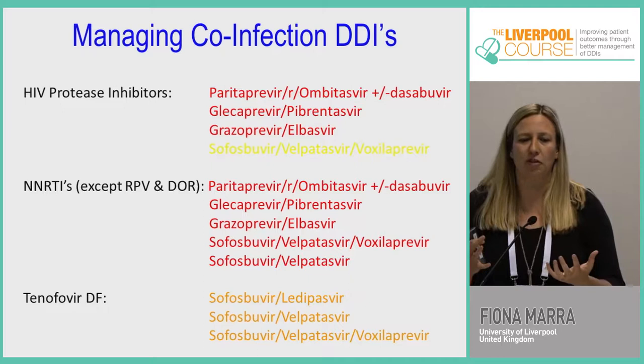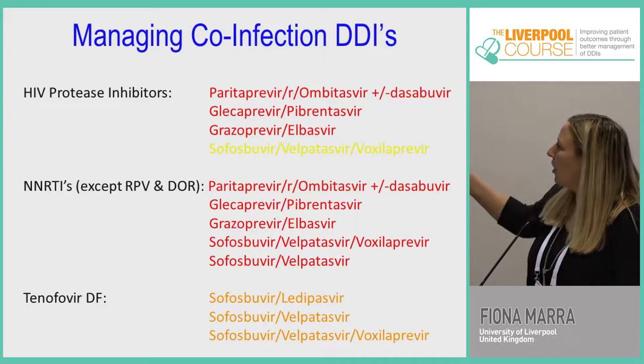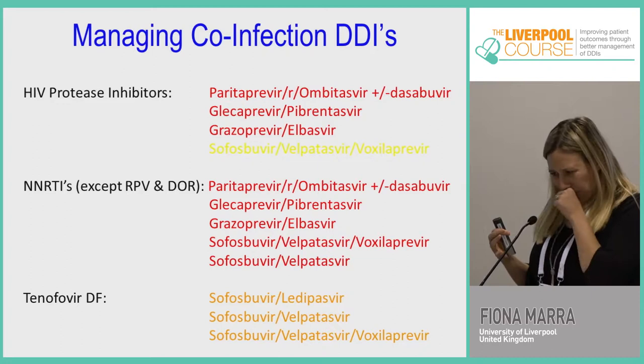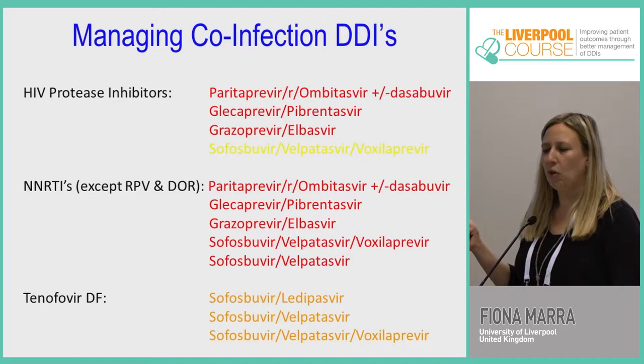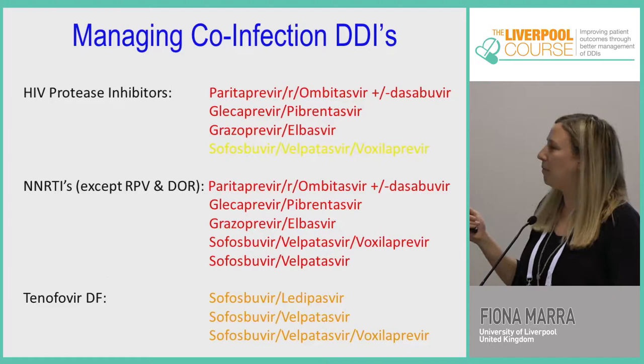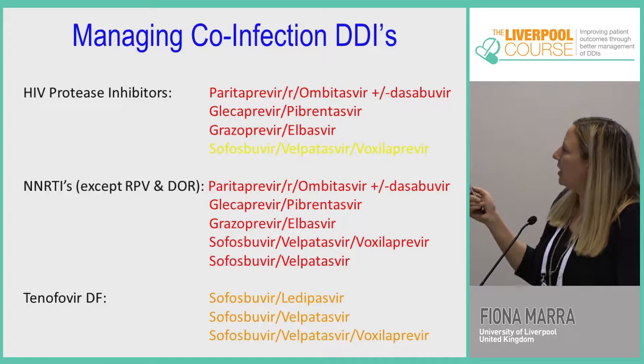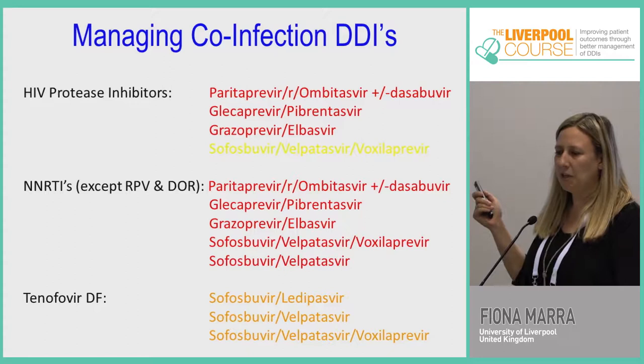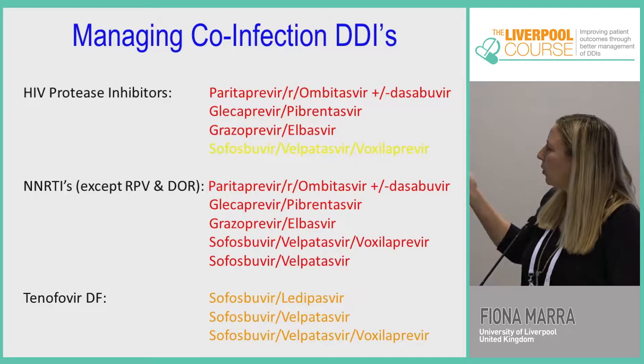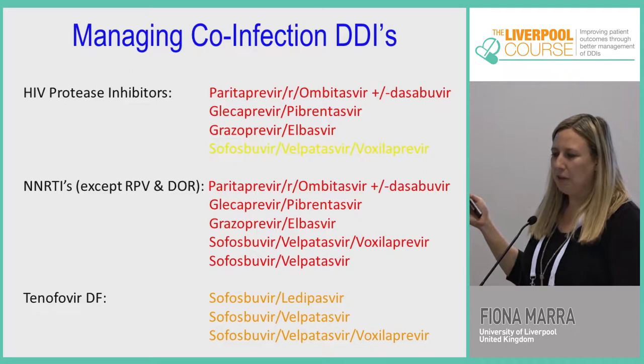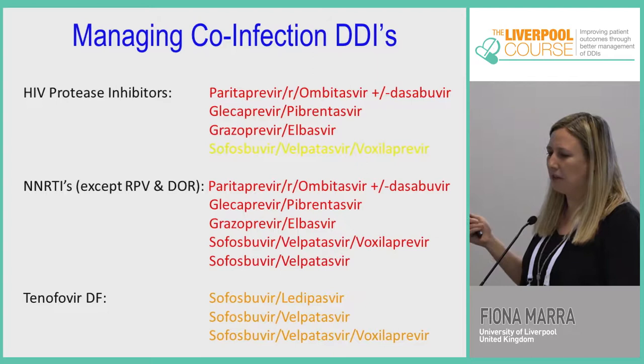When we're thinking about drug interactions, these are some of the key Hepatitis C directly acting agents that interact with antiretrovirals. If we have a patient on HIV protease inhibitors, we have some contraindicated medications — the 3D (Paritaprevir/Ombitasvir), Glecaprevir/Pibrentasvir (Mavaret), and Grazoprevir/Elbasvir. With sofosbuvir/velpatasvir/voxilaprevir (Vosevi), there is caution with certain boosted drugs.